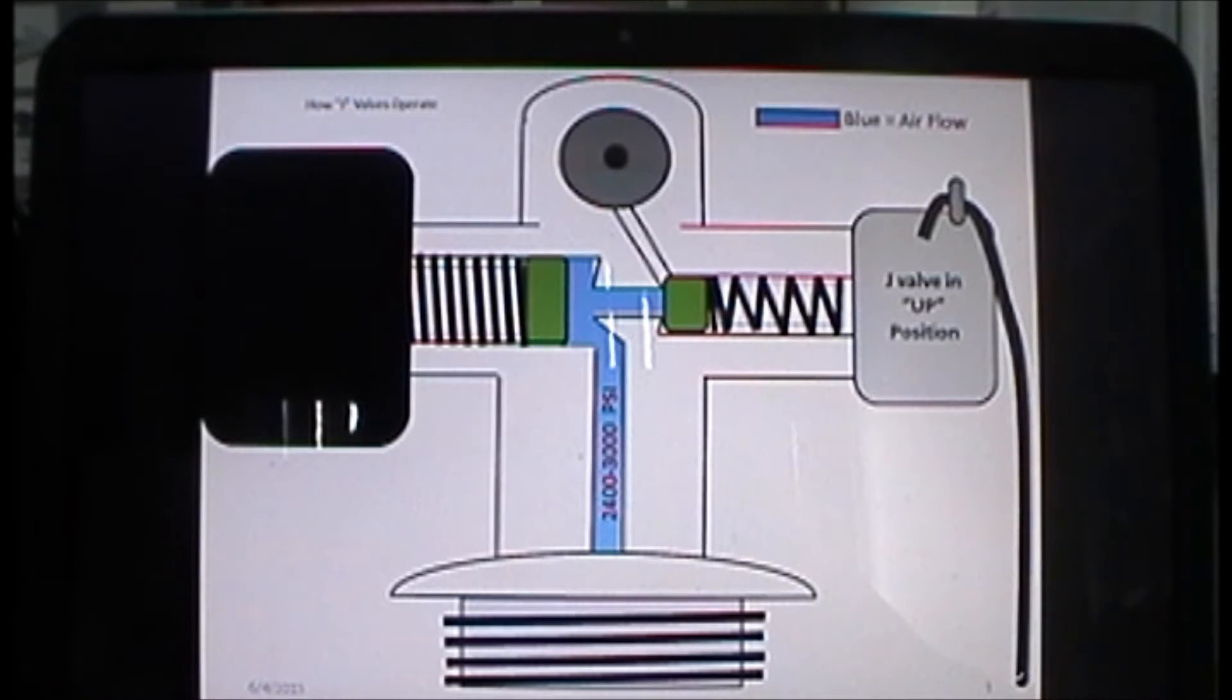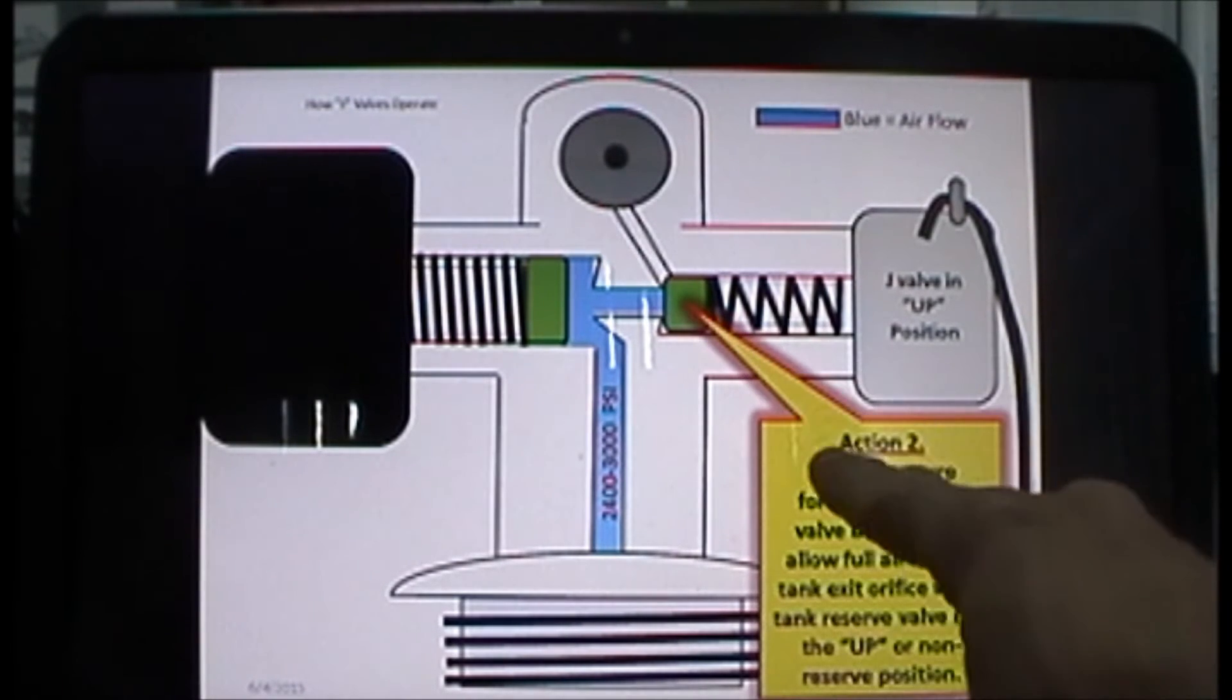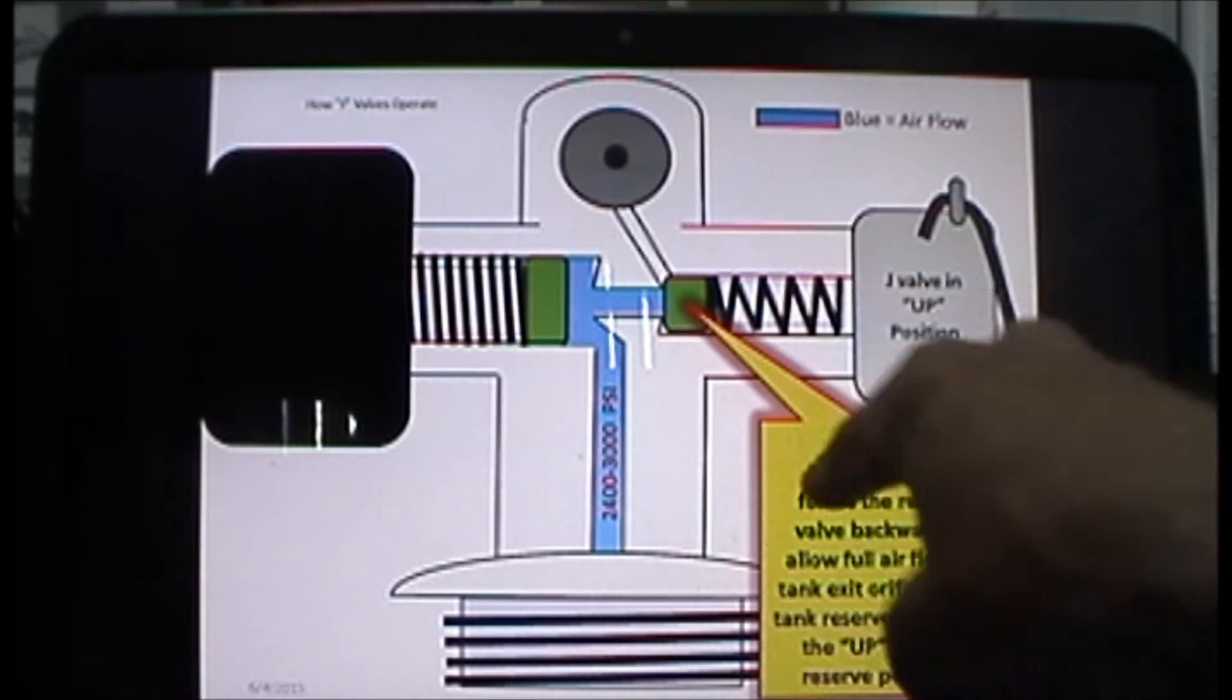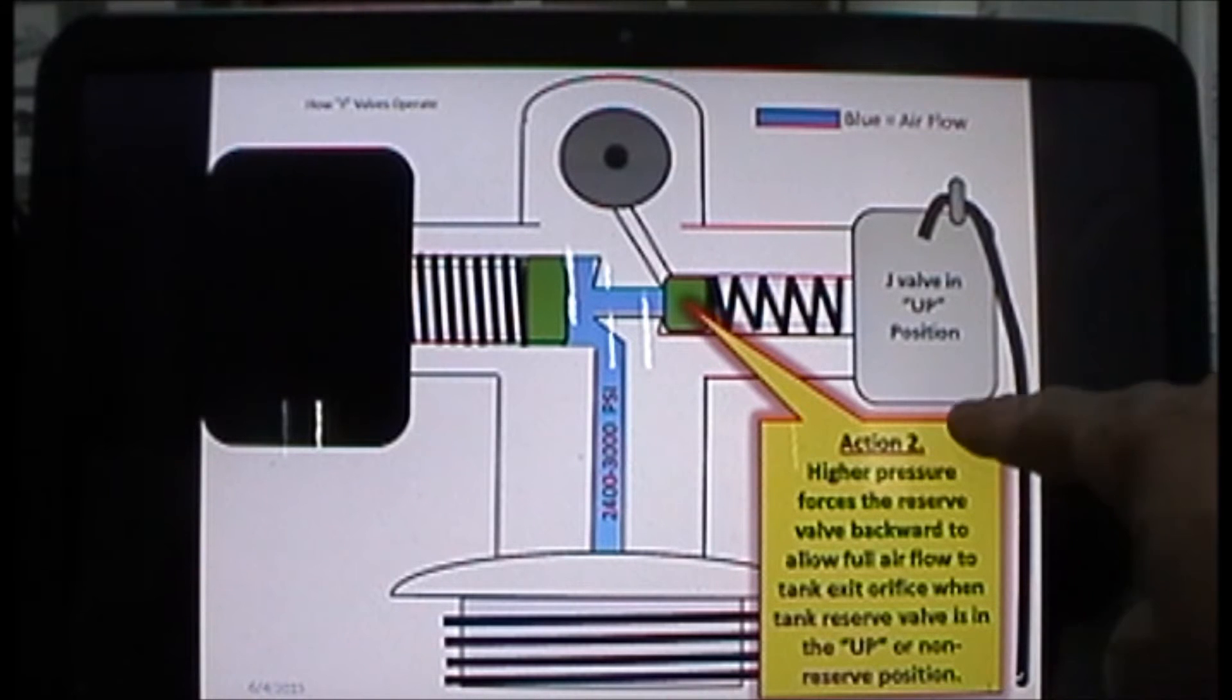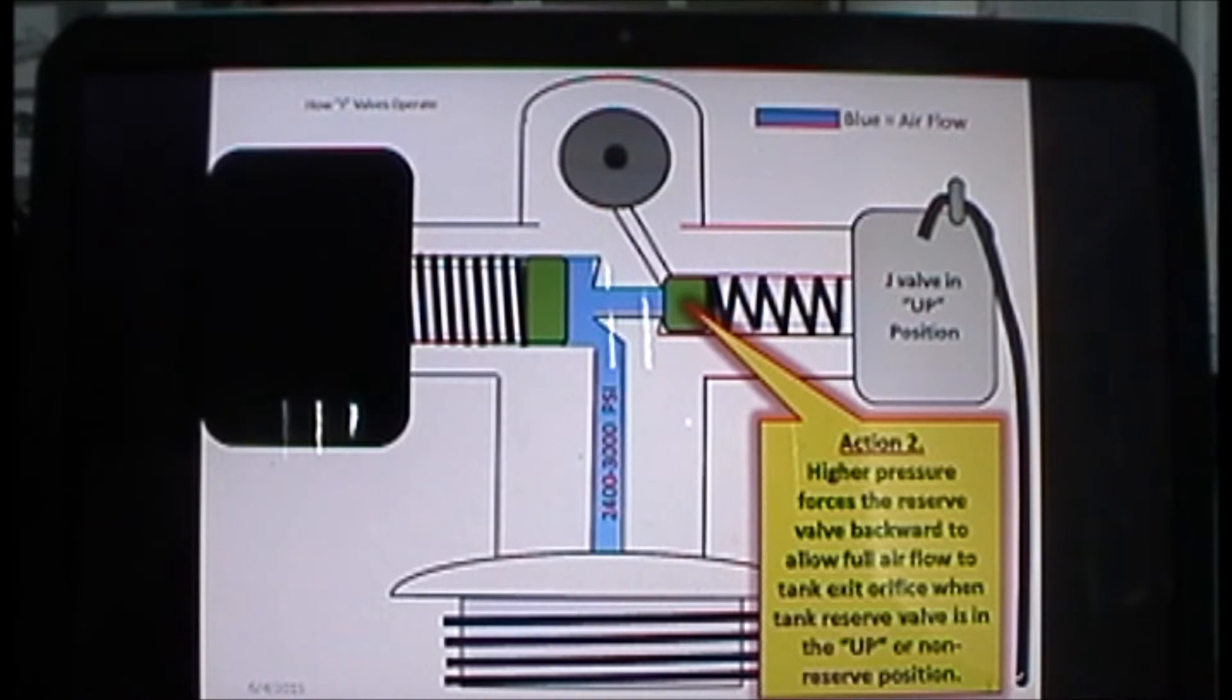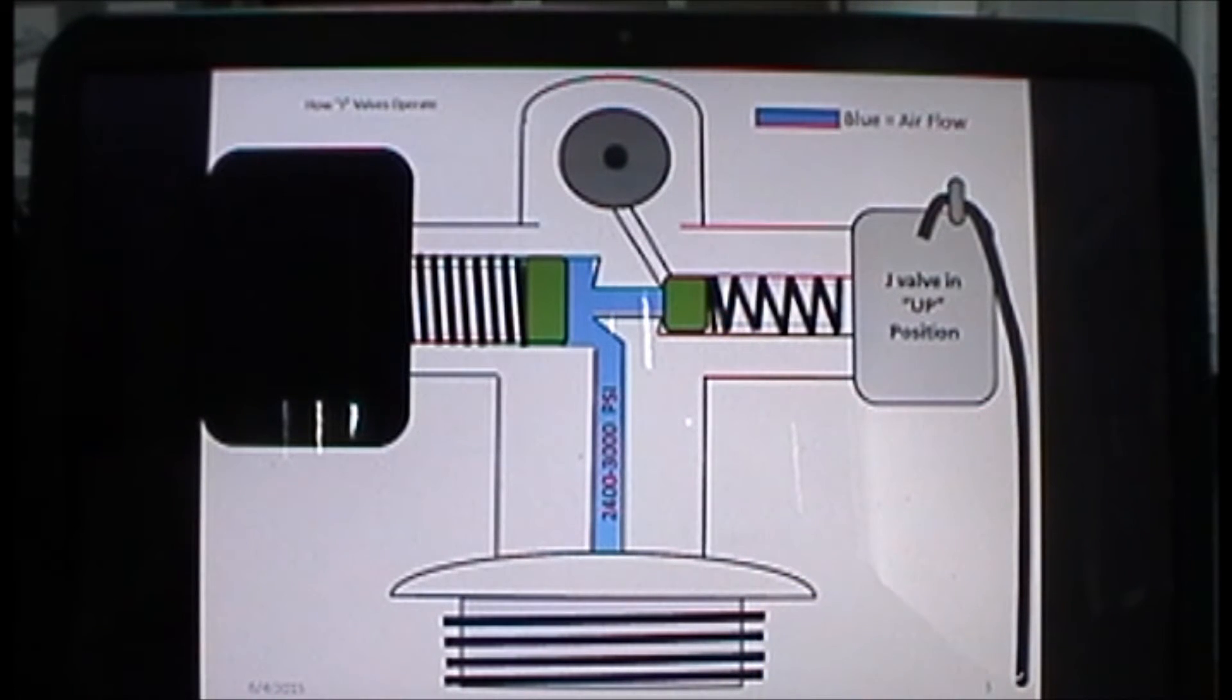...flows through. Second action: the higher pressure forces the reserve valve backward to allow full airflow to the tank exit orifice with the J valve in the 'up' or non-reserve position. The tank pressure is filling up, forcing that reserve valve back, and you get full flow at the top.